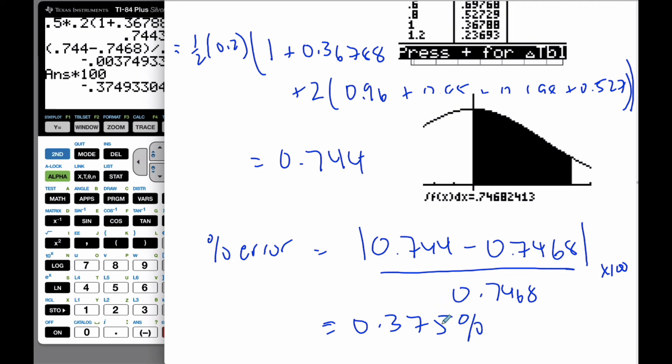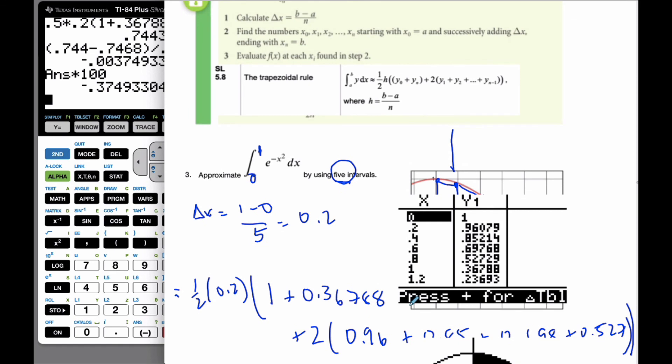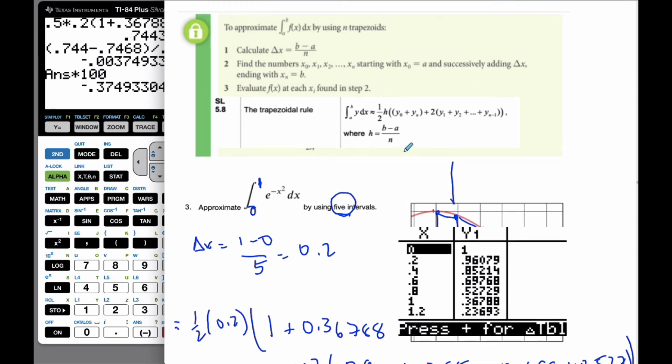So that's with only five intervals, the area is pretty close to being accurate. And that is how we do the trapezoid rule.